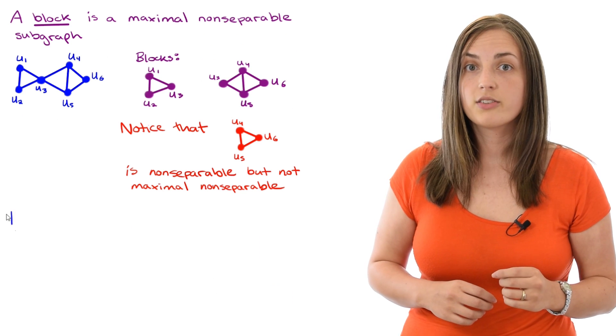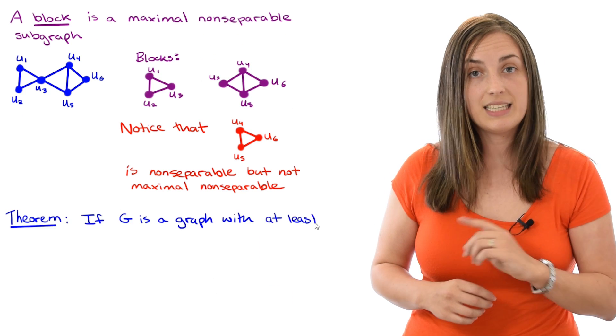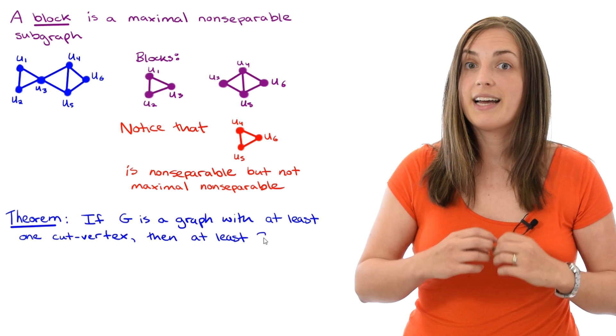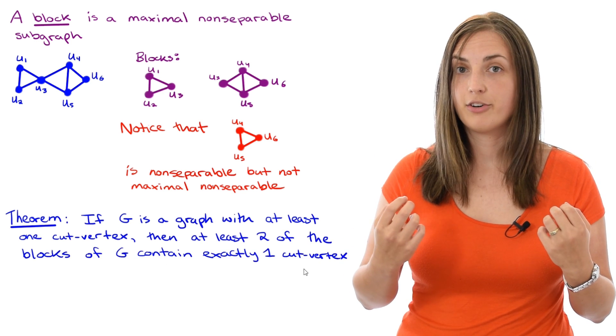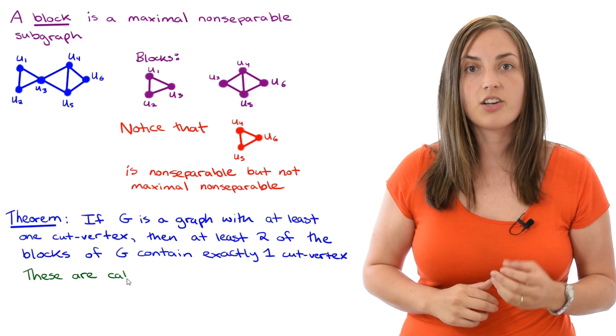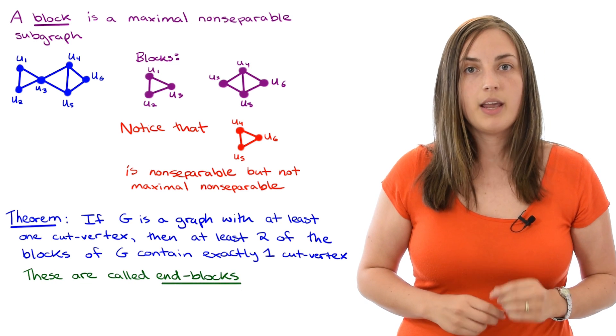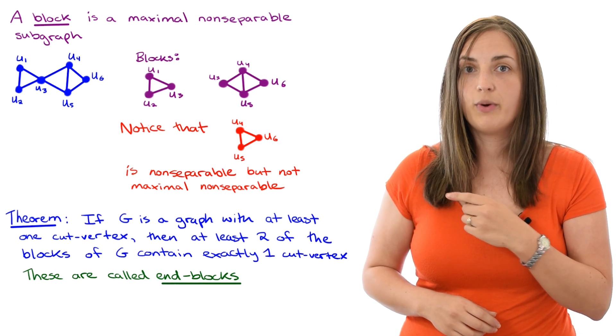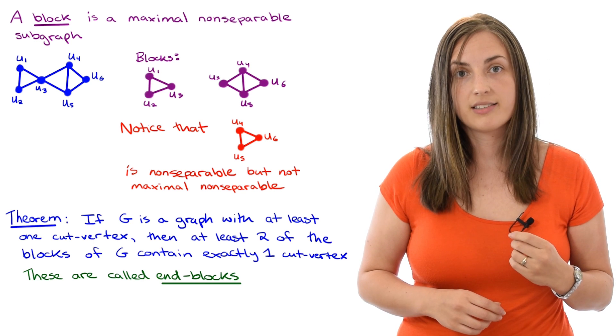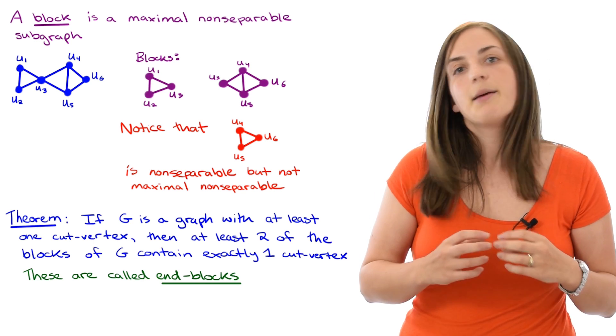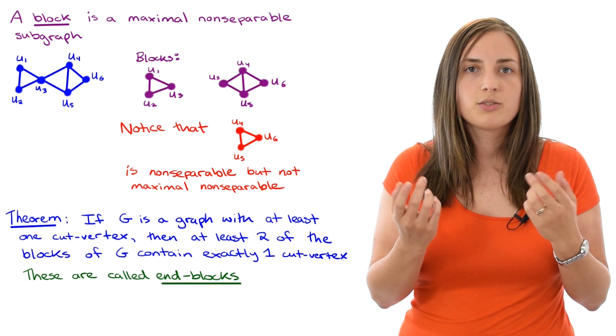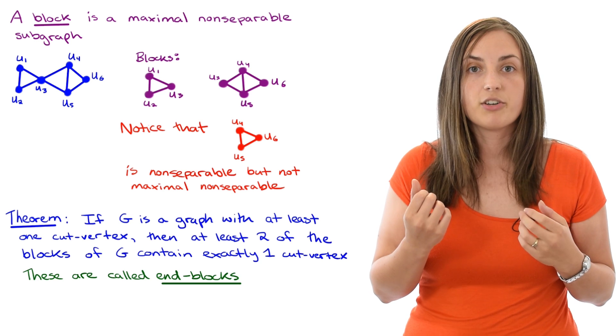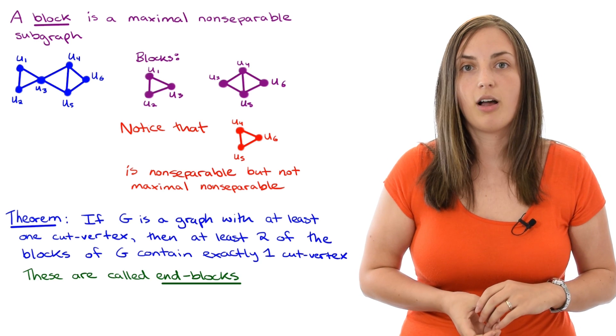Here's a cool theorem about blocks. In a graph that has at least one cut vertex, there will be at least two blocks which each contain exactly one cut vertex. These special blocks are called end blocks. If we take a look at our example, we notice that there was only one cut vertex, that was u3, and it belonged to both of our blocks. So we have these two blocks, which have the special property of having only one cut vertex in them. So they are two end blocks.